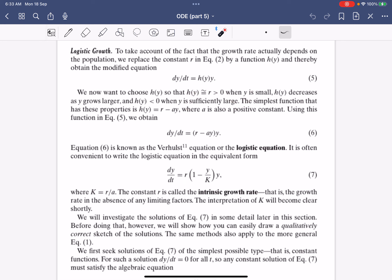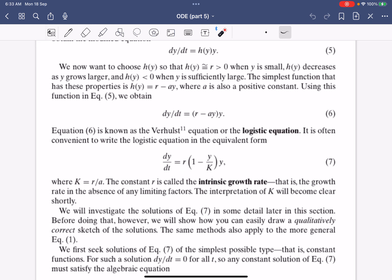Using what we want, the simplest function will be this negative linear function, so it's like some constant r minus ay. These equations are now known as the Verhulst equation or the logistic equation.